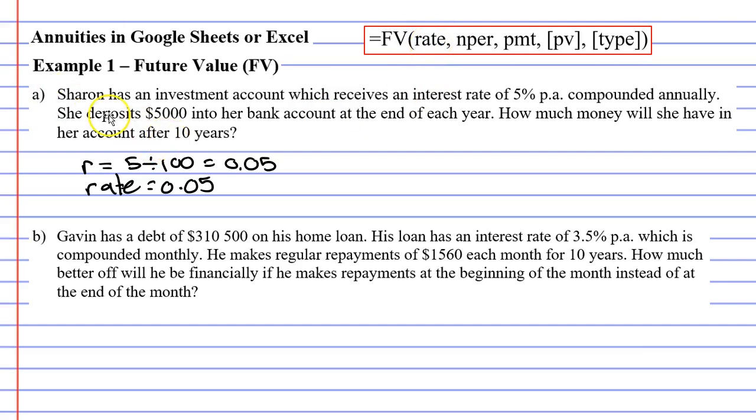We also have a repayment here. Sharon deposits $5,000 into her bank account at the end of each year. Usually we use the pronumeral capital D for our repayment. When we look at the formula above we can't see a capital D but we can see PMT. This stands for payment. So PMT will equal our $5,000 repayment. You'll also notice it has NPER on it. That stands for the number of time periods which is 10 years. So we'll write that NPER is going to equal 10.